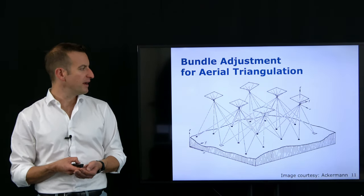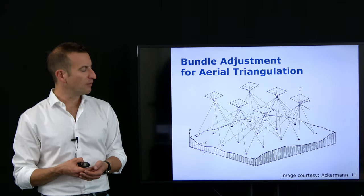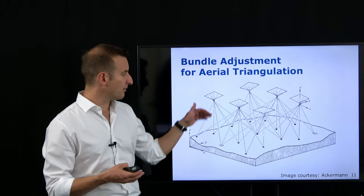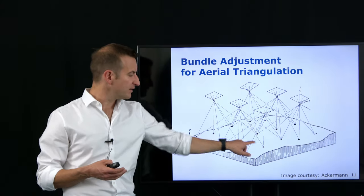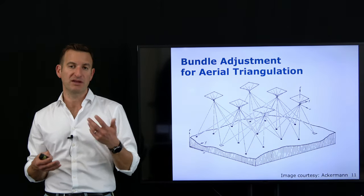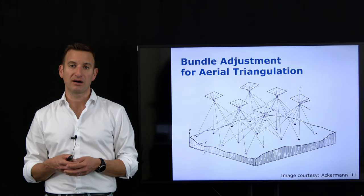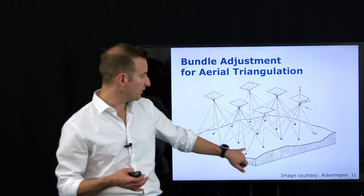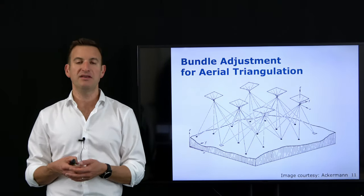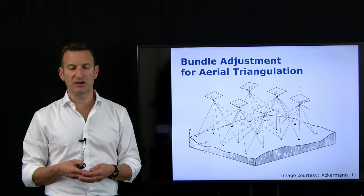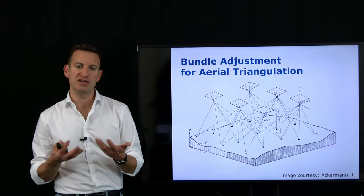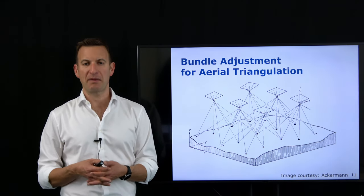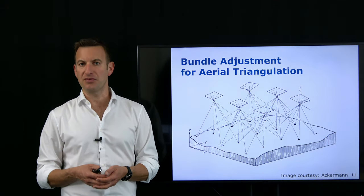Bundle adjustment is a technique around since approximately the 1950s, developed in the photogrammetry community. It was traditionally used for building aerial maps by flying over the environment and triangulating certain points. We also typically use so-called control points, indicated here by triangles — points where we know the 3D locations in the scene already — which allow us to anchor the photogrammetry model in the real world and fix certain points at certain coordinates.